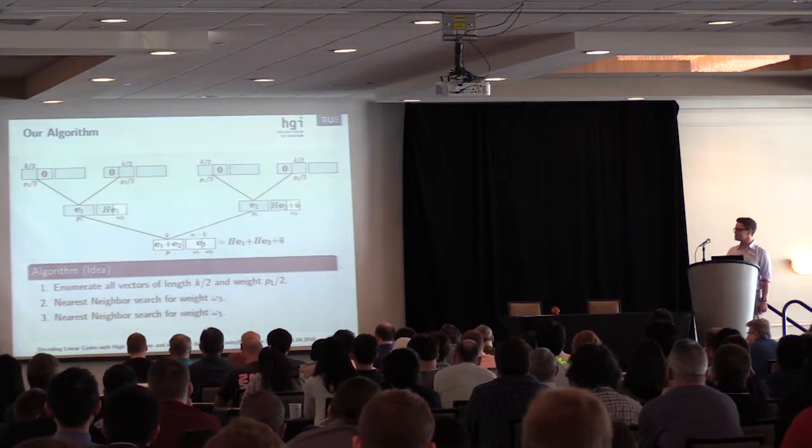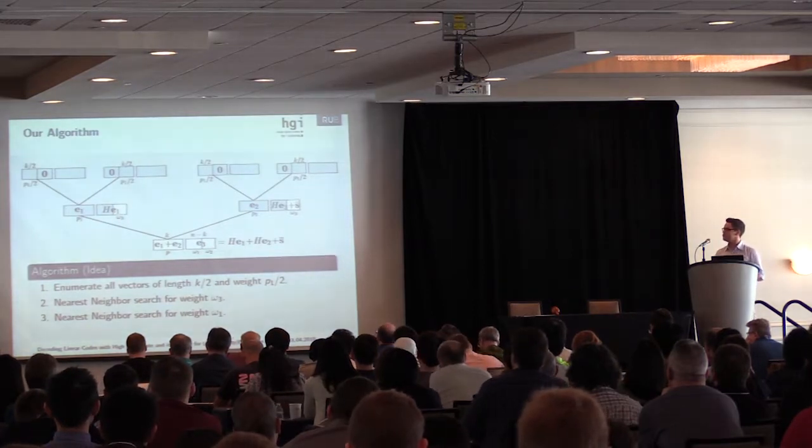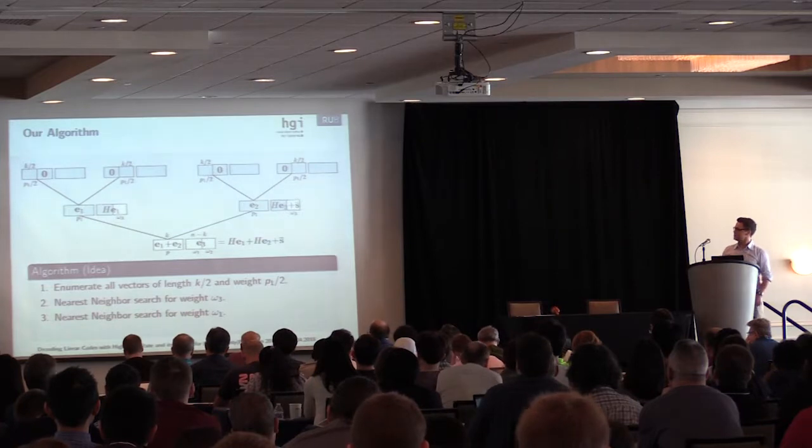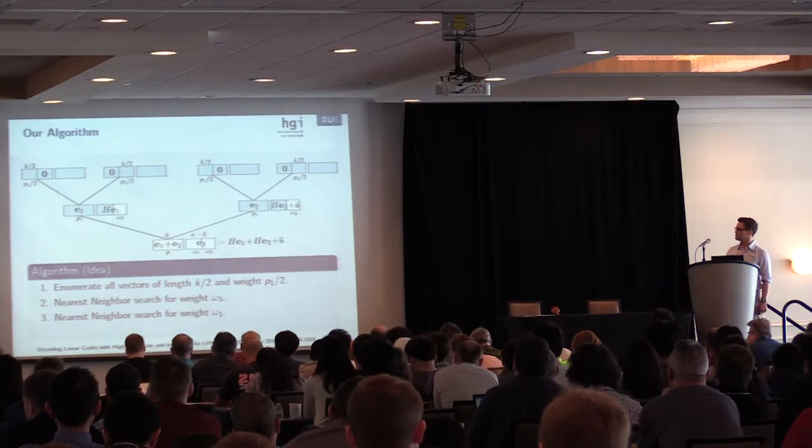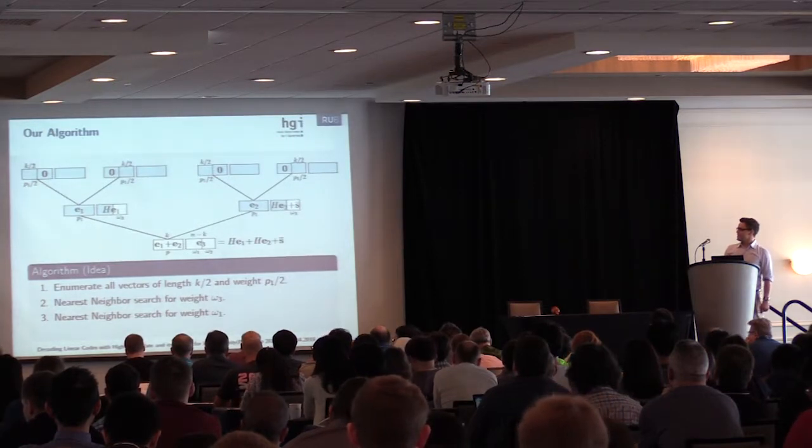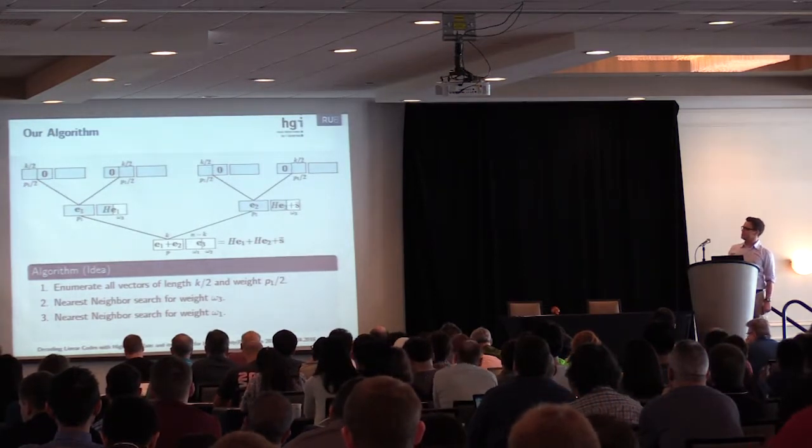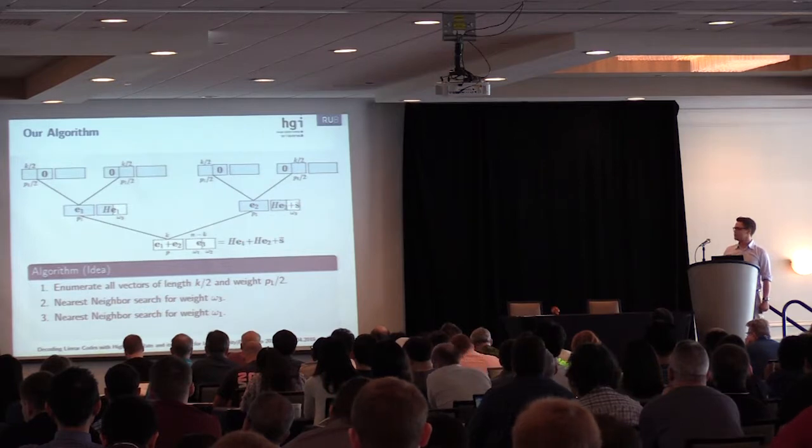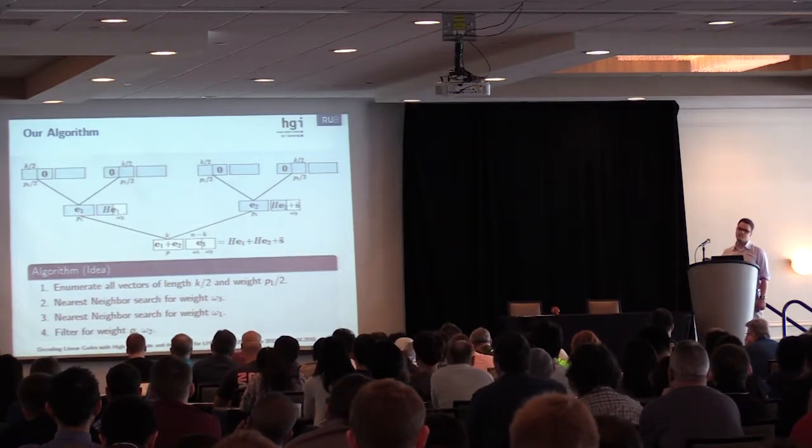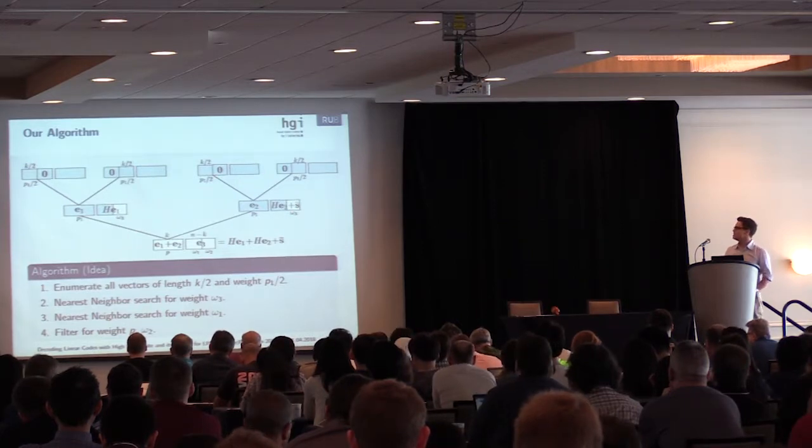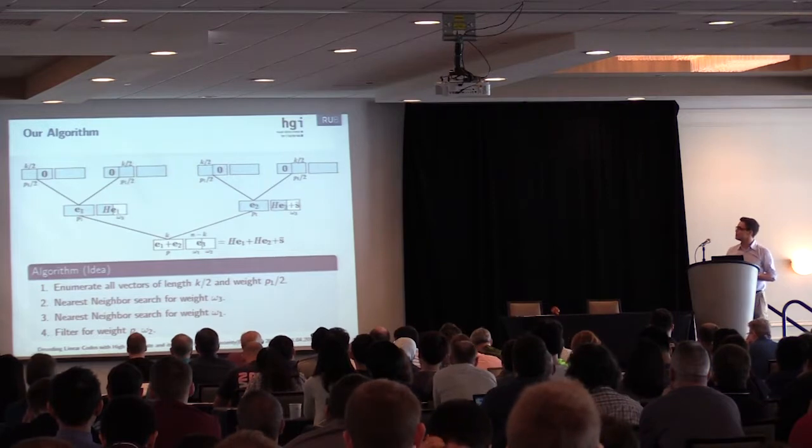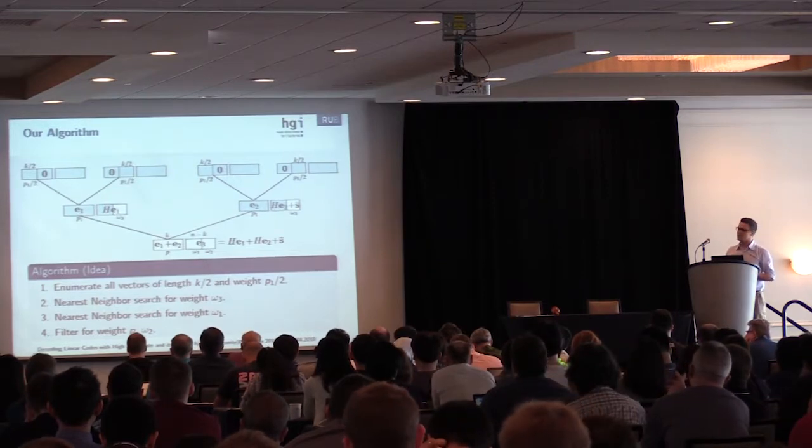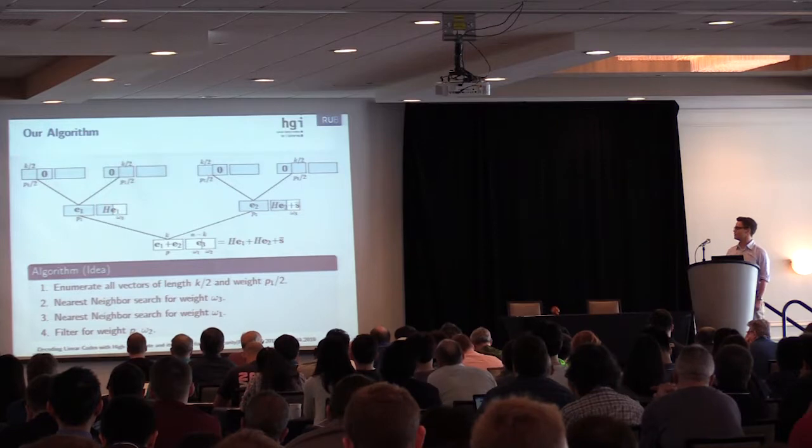Now on the two remaining lists, we run another nearest neighbor search for weight omega 1, so that we have weight omega 1 in the first block of what will be our vector e3. Of course, e1 and e2 don't add up automatically to weight p now, so we have to filter for weight p. We discard all vectors which don't have weight p. And we do the same on the last block where we add up vectors of weight omega 3. We discard all vectors which don't have weight omega 2.